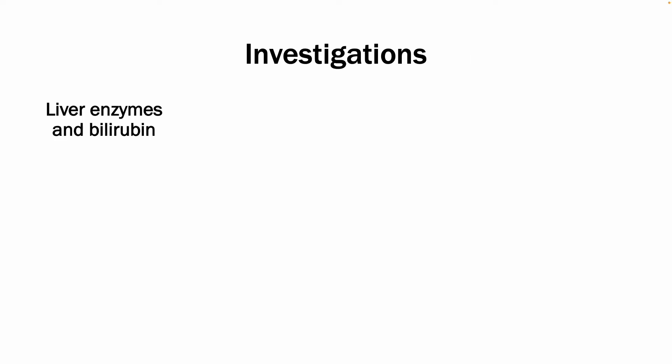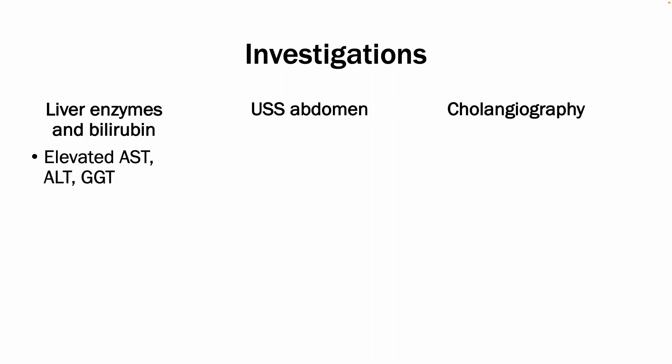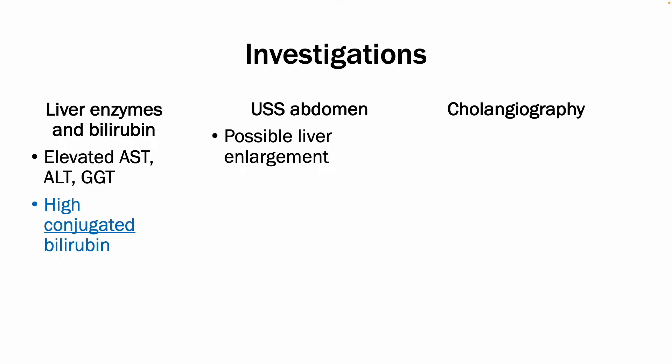Multiple investigations can be ordered, but the key ones are liver enzymes and bilirubin levels, abdominal ultrasound, and cholangiography. Liver enzymes will be elevated — specifically AST, ALT, and GGT. Bilirubin testing will show high levels of conjugated bilirubin but normal levels of unconjugated bilirubin. Ultrasound can show possible liver enlargement and may also highlight biliary tract abnormalities.